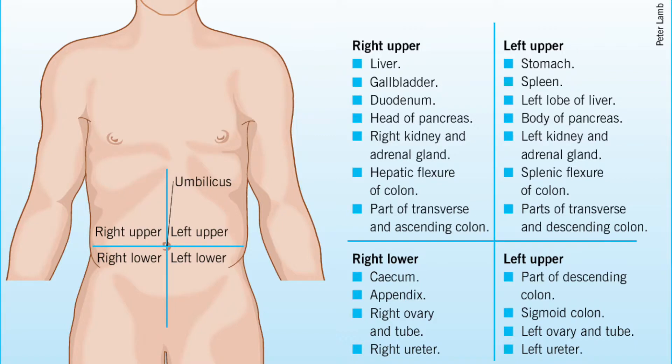The left upper quadrant contains the rest of the pancreas, stomach, and transverse colon, part of the descending colon, the left kidney, left adrenal gland, spleen, and the left lobe of the liver.